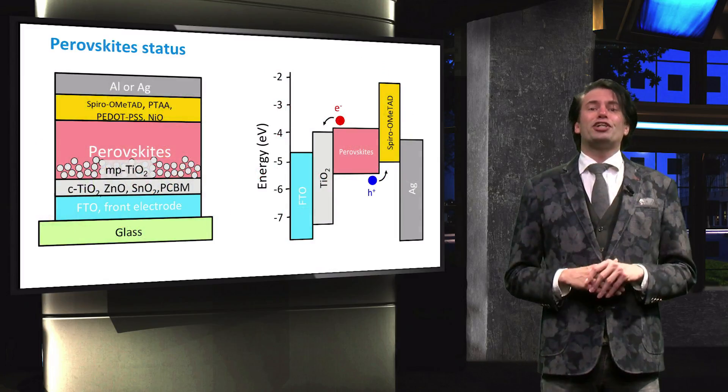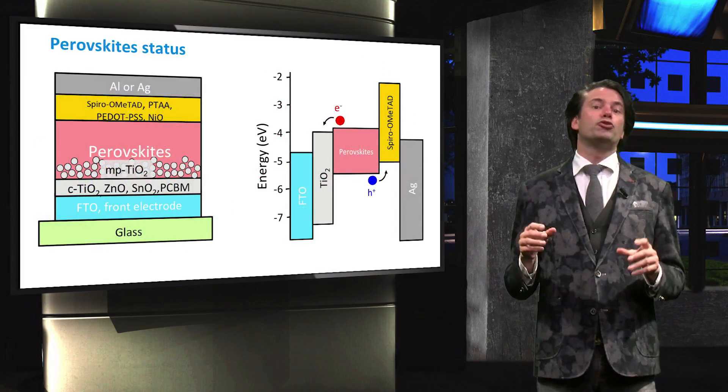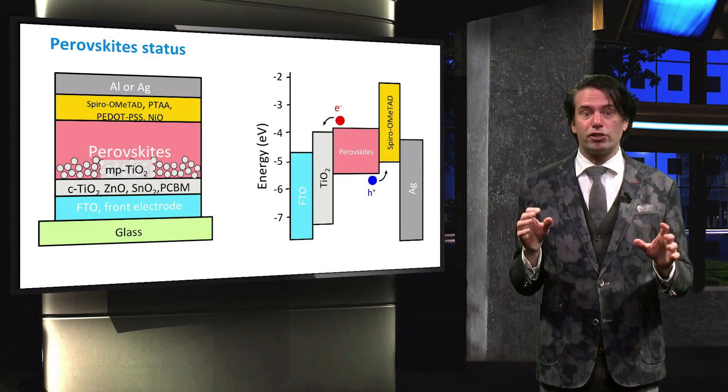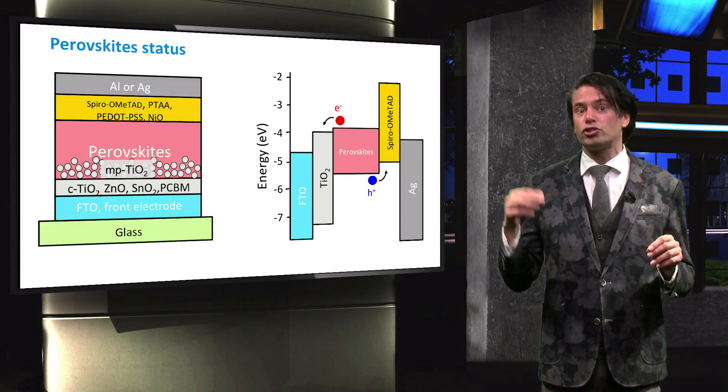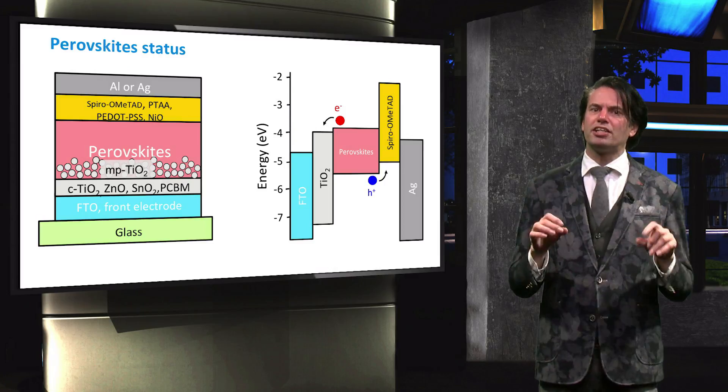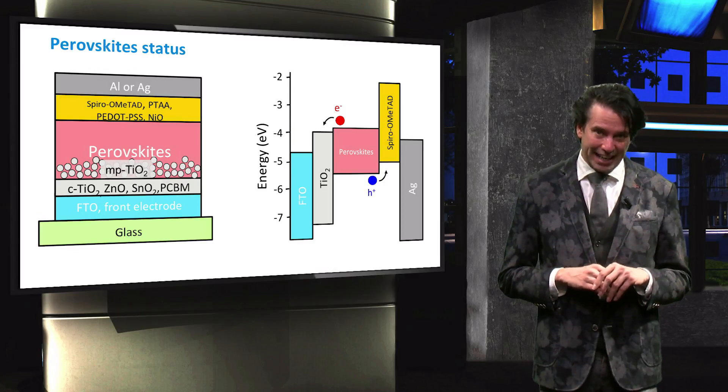The record conversion efficiency of perovskite solar cells that is certified is equal to 19.7%. In literature, efficiencies of perovskite solar cells are reported just over an efficiency of 22%. These are promising results if we consider that this material has been studied only for less than a decade.